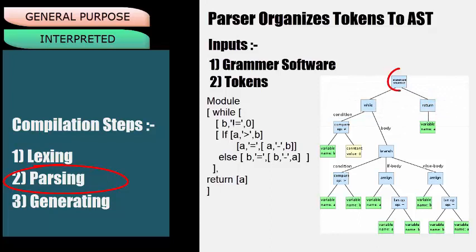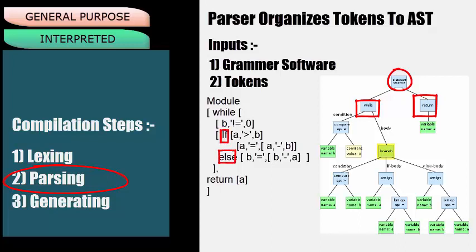In the main node of statements, you can see two child nodes: while and return. As per grammar software, while has a condition and a body. The condition is a not-equal-to operator with two comparison values — left is a variable and right is constant value 0. In the body, we have branching statements if and else. Only the if part has a condition. So as per grammar, we have if condition, if body, and else body. Tokens are organized in this syntax tree structure.